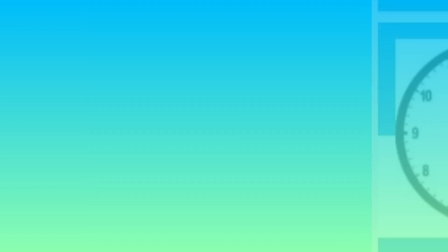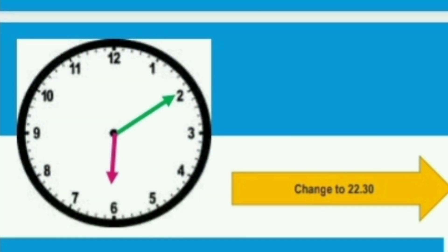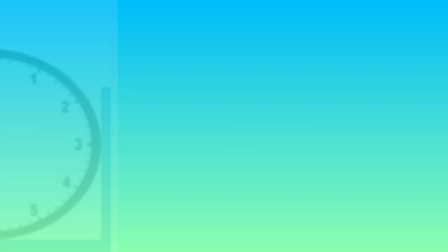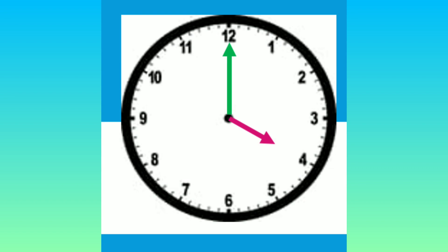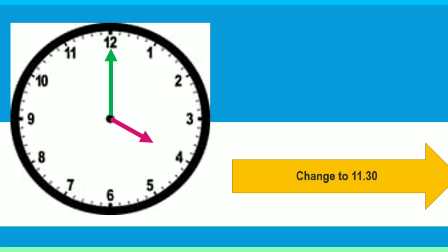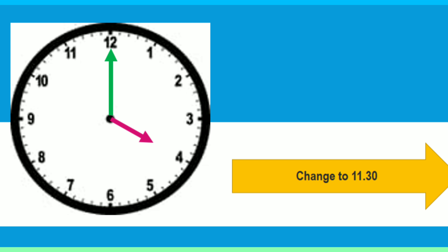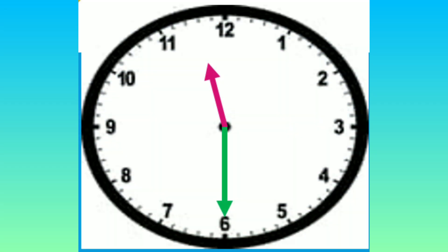If you change to twenty two thirty, how will the clock show? Twenty two thirty is railway time, so the time is ten hours thirty minutes. Good. Shall we go to the next example? Look at the clock — what time is it? Four o'clock. Yes. If you change to eleven thirty, the clock should show like this.